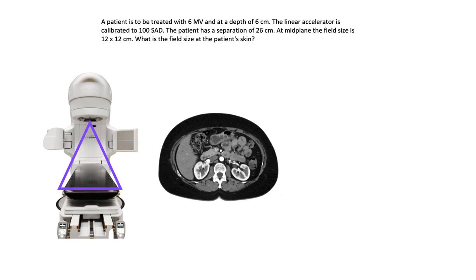Let's go over this question submitted by a student in radiation therapy school. The question reads: a patient is to be treated with 6 MV at a depth of 6 cm. The linear accelerator is calibrated to 100 SAD. The patient has a separation of 26 cm. At midplane, the field size is 12 by 12 cm. What is the field size at the patient's skin?